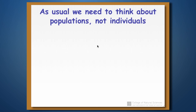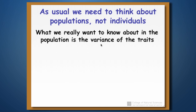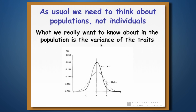Now we need to stop thinking about individuals and think about populations, because evolution occurs to populations, not individuals. What we're going to do is think about the amount of variance in the trait. Variance is a technical term from statistics. Looking at two bell curves — one broad with a solid line and one narrow with a dotted line — they both have the same mean, but the spread around that mean is different. The solid line has larger variance because its values are spread more widely around the mean.